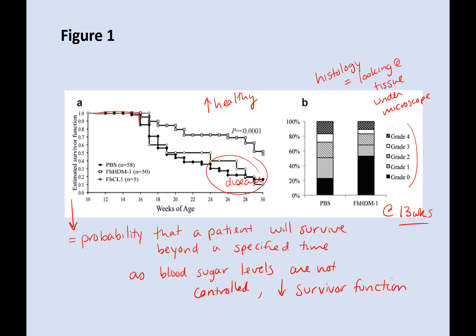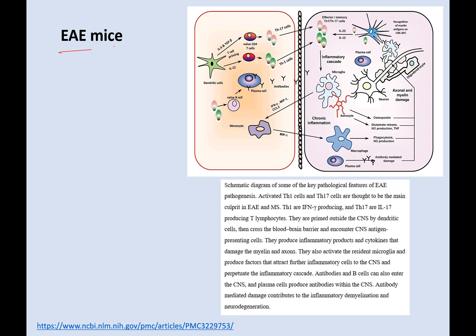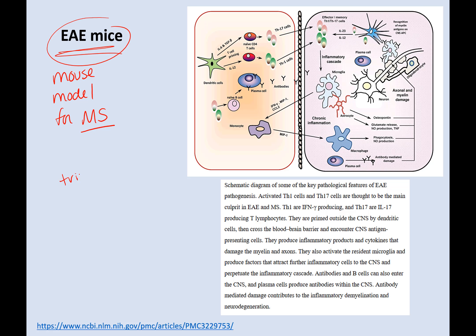It talks about the grades in the paper and what they all mean. Basically grade zero is no death of the beta cells. The second disease they're going to look at is EAE — experimental autoimmune encephalomyelitis — which is basically a mouse model for multiple sclerosis. The way they trigger this is with a peptide called PLP139-151.